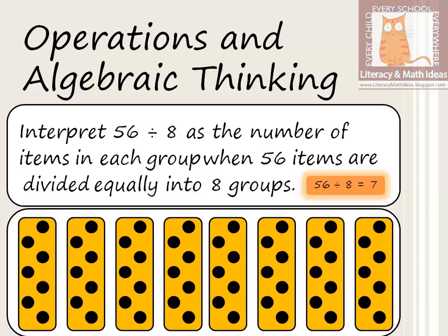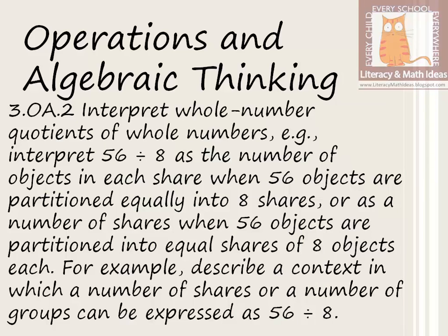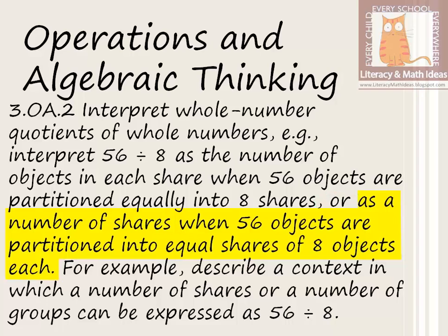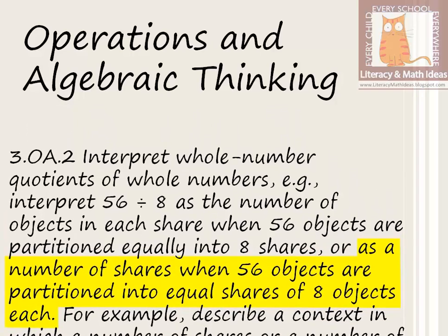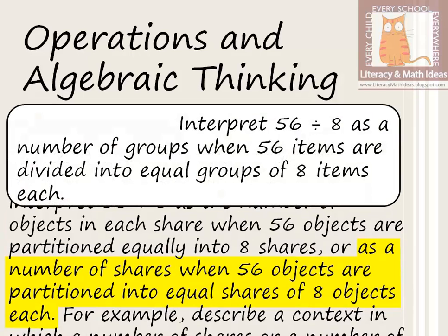Looking at the second half of the standard, it says: interpret 56 divided by 8 as a number of shares when 56 objects are partitioned into equal shares of 8 objects each. To reword this more clearly: interpret 56 divided by 8 as a number of groups when 56 items are divided into equal groups of 8 items each.